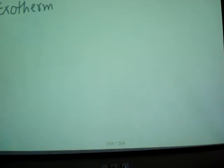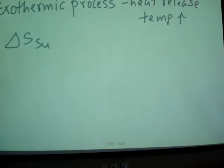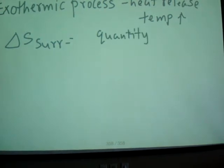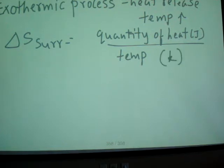For an exothermic process, heat is released, so the temperature of the surrounding increases. Looking at the definition — quantity of heat in joules divided by temperature in Kelvin — since surrounding temperature increases, the sign of ΔS_surrounding is positive.